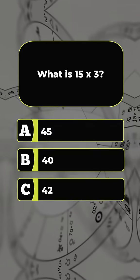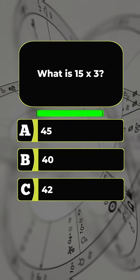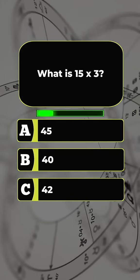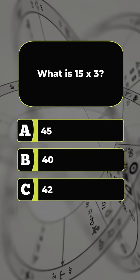Question 6. What is 15 times 3? The answer is A, 45.